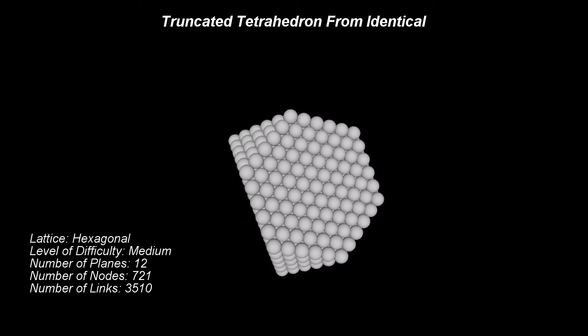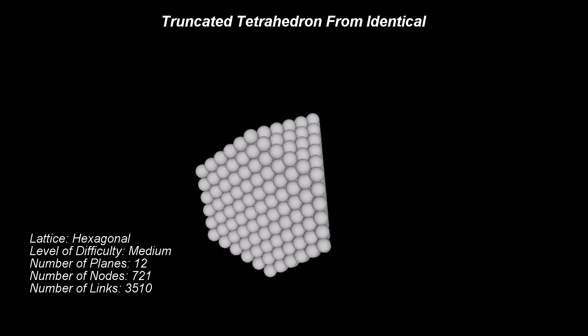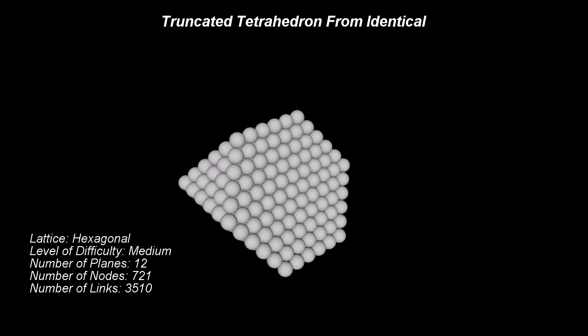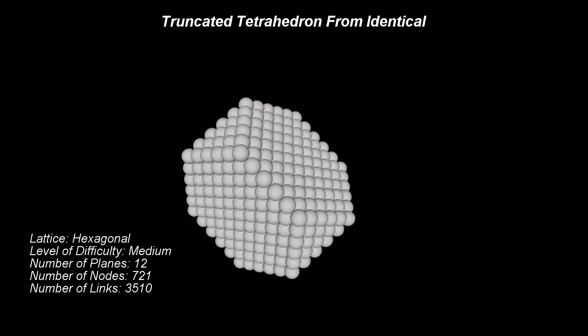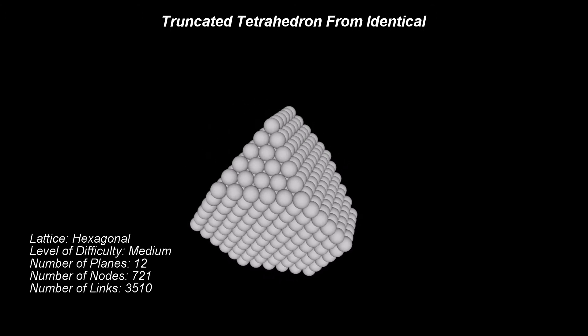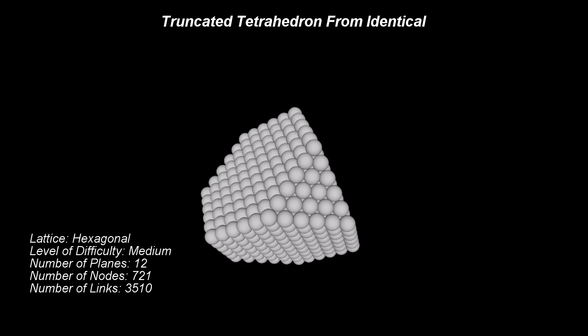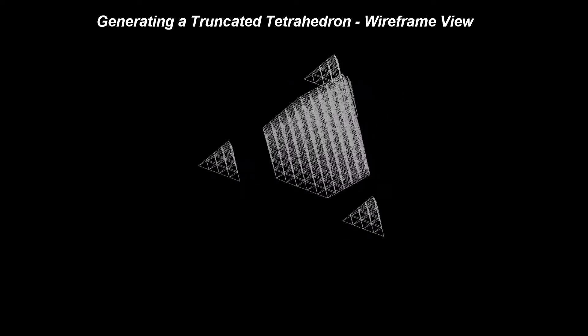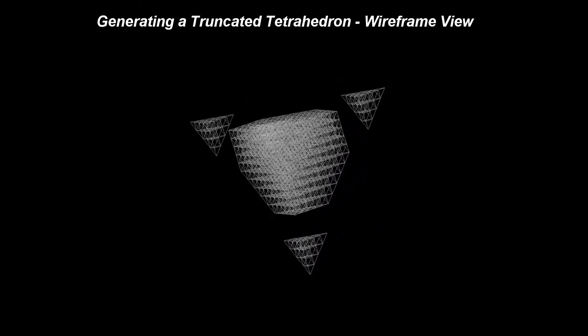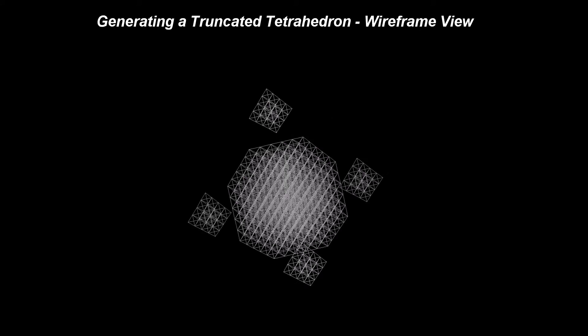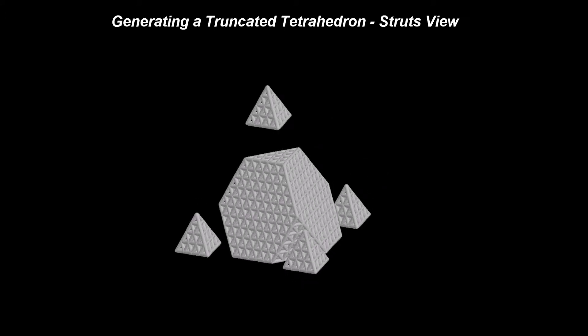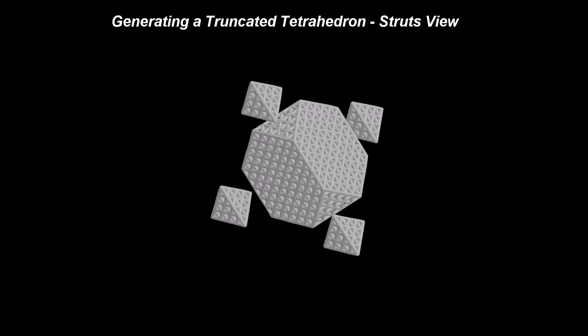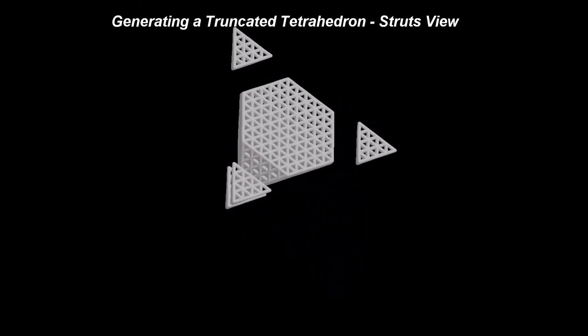One can observe that the truncated tetrahedron has two types of edges. The first type of edges is formed between two hexagonal faces. The second type of edges is formed between a triangular face and a hexagonal face. It can be seen clearly that the new solid has 8 faces, 12 vertices, and 18 edges.